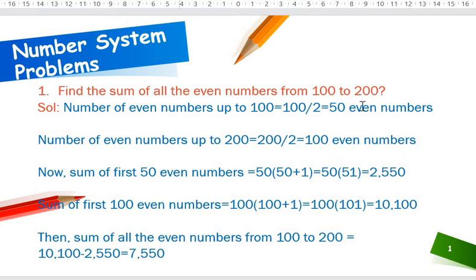Sum of first fifty even numbers equals n into n plus one, that is fifty into fifty plus one, fifty into fifty-one, which equals two thousand five hundred and fifty.